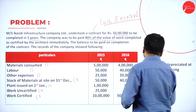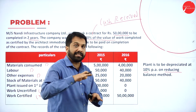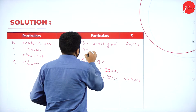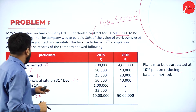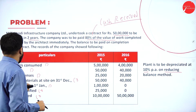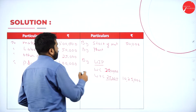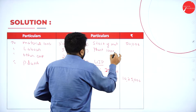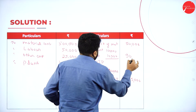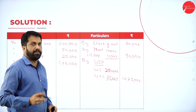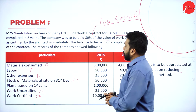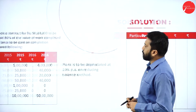For plant, we have depreciation at 10% on reducing balance — diminishing balance, also called reducing balance. Plant value is 1 lakh minus 10% depreciation of 10,000, giving an answer of 90,000. Plant issued is over; work certified and work uncertified are also done.